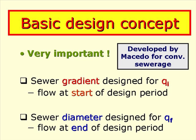Another really important design concept developed by Macedo — originally for conventional sewerage but actually more appropriate for simplified sewerage — is that the sewer gradient is designed for QI, the flow at the beginning of the design period, and the sewer diameter is designed for QF, the flow at the end of the design period.